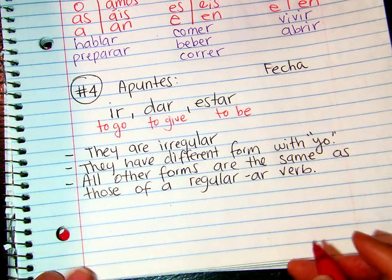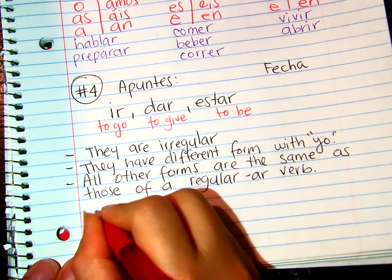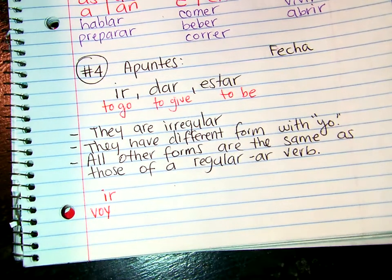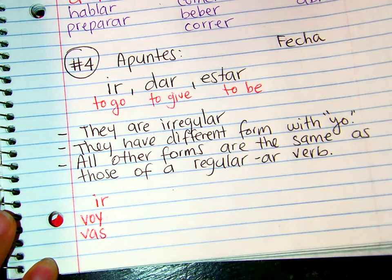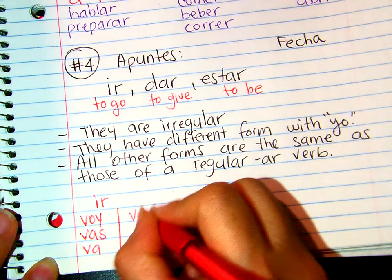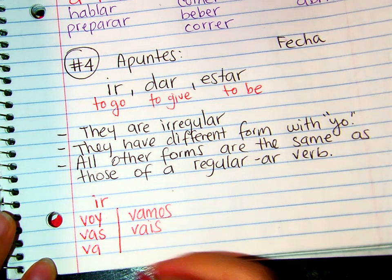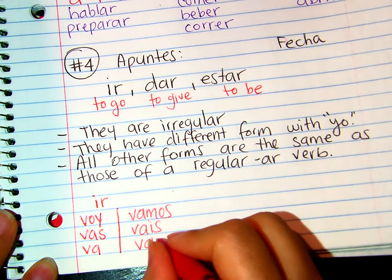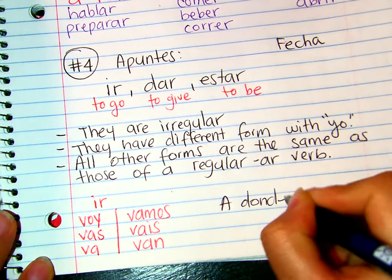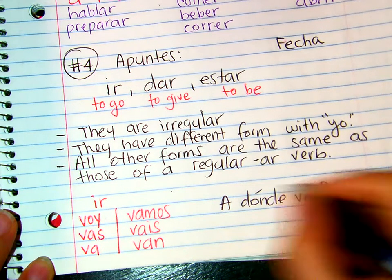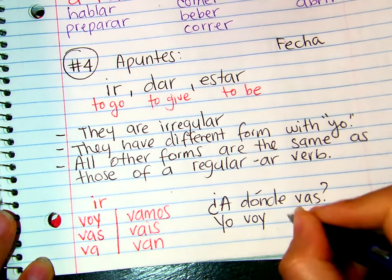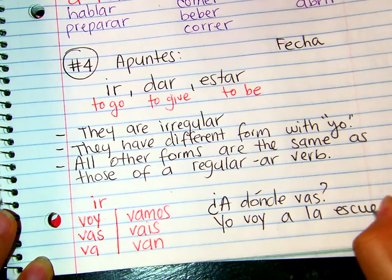So, first one we're going to talk about: ir. How do we conjugate ir? Yo voy, tú vas, él va, nosotros vamos, vosotros vais, ellos van. Where do you go? Yo voy a la escuela — I go to school.